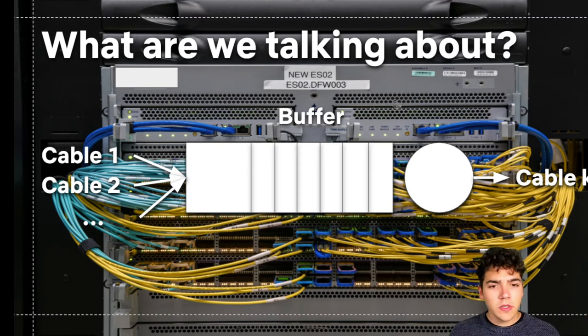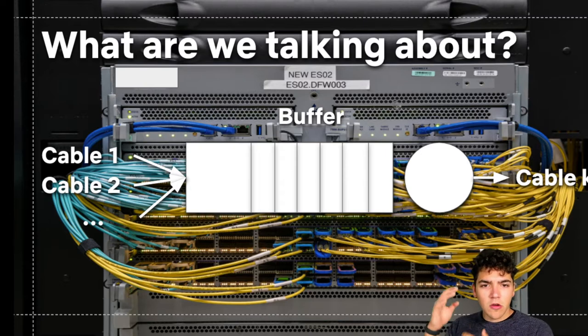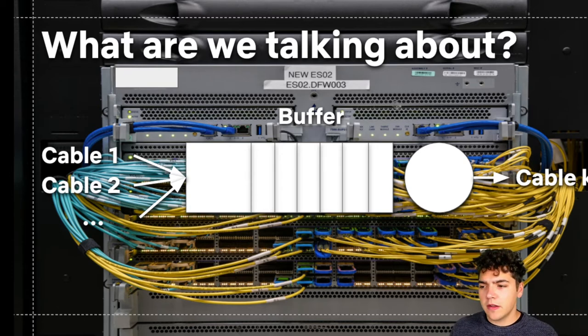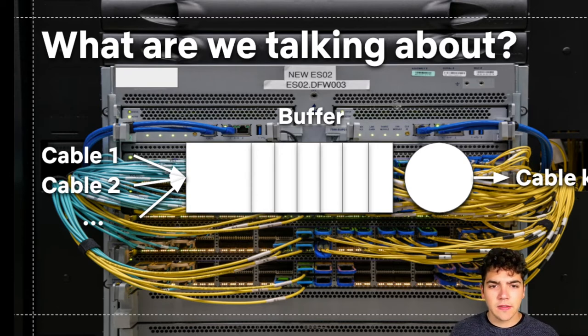The reason for these buffers is if we have a whole bunch of packets which all arrive at once along these different cables, we can put them into the buffer and then send them out when we have time, instead of having to throw away some of these packets.